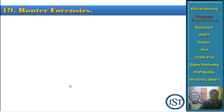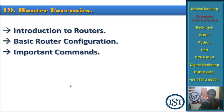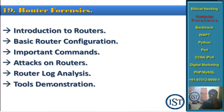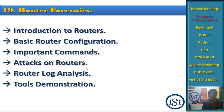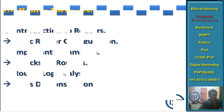Chapter 19 is Router Forensics — one of my favorite chapters. I am really good at networks and networking concepts. I will give you an introduction to routers, basic router configuration — showing how a routing table works, how network traffic is routed between interfaces, to other routers, or between clients. We'll cover important routing commands, attacks on routers, and how a potential hacker can change your router configuration and how to investigate them. Router log analysis and tools demonstration are also included.